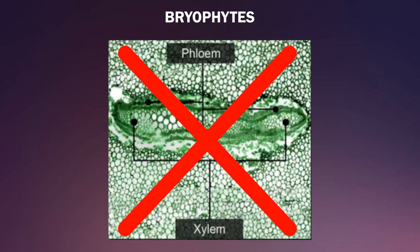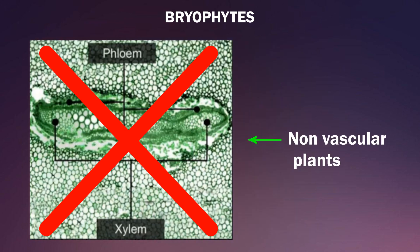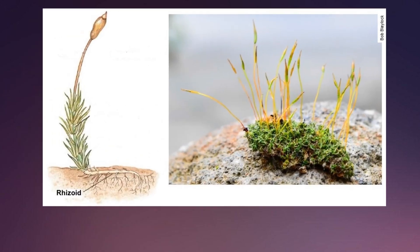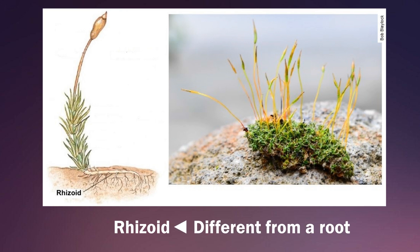Bryophytes do not have xylem and phloem, and thus they are non-vascular plants. The root-like structure which fixes the plant in the soil is called rhizoid. Rhizoids do not have the capability to absorb nutrients from soil, and thus they are different from a root.